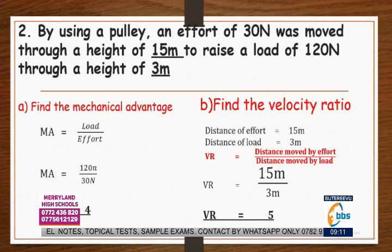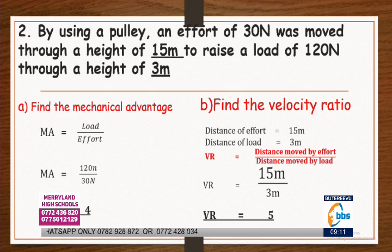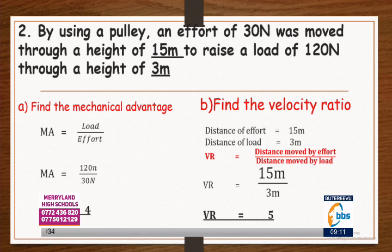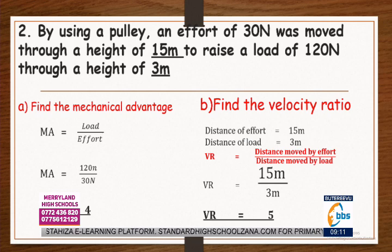For part B, when looking for the velocity ratio, use the same method: effort distance divided by load distance. The effort distance was 15 meters, and the load distance is 3 meters. When you divide that, you get 5 as your velocity ratio.